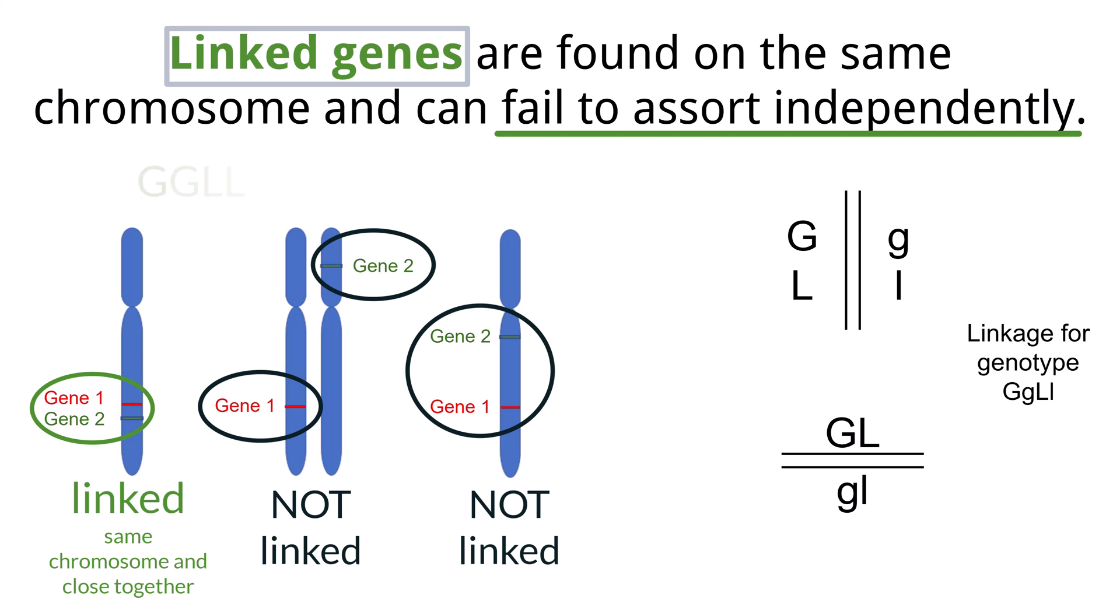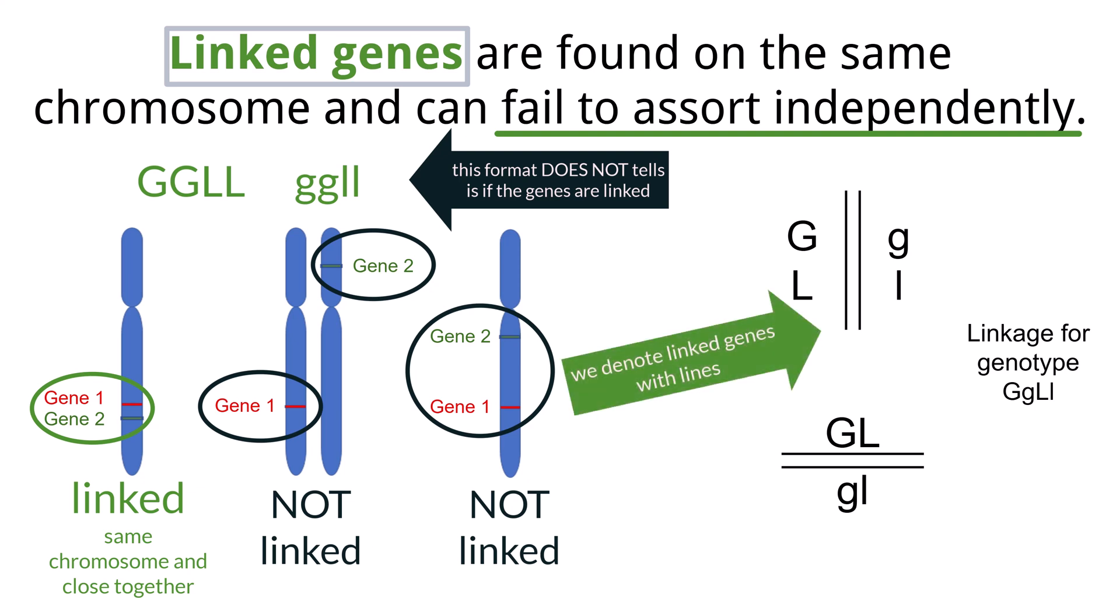A linkage group is a group of genes inherited together because they are on the same chromosome and are close to each other. When you see a genotype of uppercase G, uppercase G, uppercase L, uppercase L, or lowercase g, lowercase g, lowercase l, lowercase l, there is nothing about that to show if the genes G and L are linked. In order to show linkage, lines are used to represent these chromosomes.